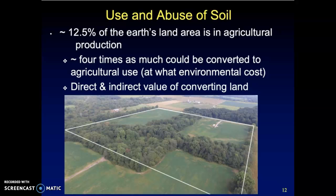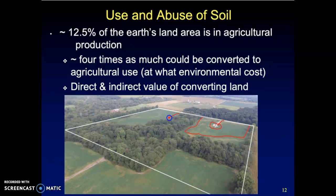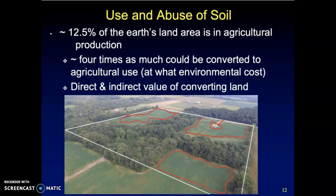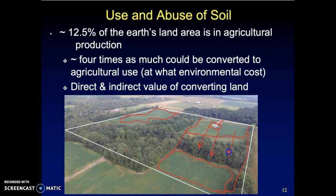Take a look at this aerial shot — the white lines represent property lines. There's a farmer with a house, barns, and sheds, and then sections of tillable land. What would the direct value be of pulling out the tree lines and getting rid of all the trees so you could run agriculture across the entire area? It would be much easier for farming if you knocked out all the tree lines so you could farm straight through.